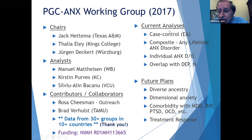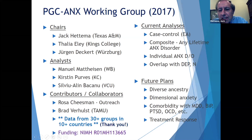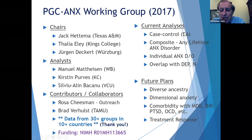Our current analyses include case-control comparisons primarily within European ancestry groups. Our cases have a composite diagnosis of any lifetime anxiety disorder among the five I described. We'll also look at individual anxiety disorders as the data allows, and examine the expected overlap with depression and neuroticism. Future plans include expanding to more diverse ancestry groups, exploring dimensional anxiety measures as endophenotypes, collaborating with other PGC groups to investigate comorbidity with mood disorders and anxiety-related disorders, and examining the genetics of treatment response.